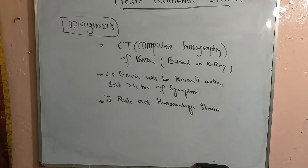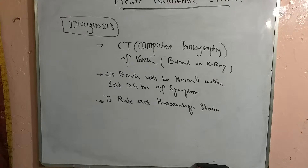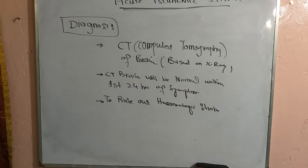CT brain is always readily available and takes no more than five minutes. We want to rule out hemorrhagic stroke early in management, since 15 to 20% of strokes can be hemorrhagic. Hemorrhagic stroke will be immediately evident on CT brain, whereas in ischemic stroke there will be no change within the first 24 hours.